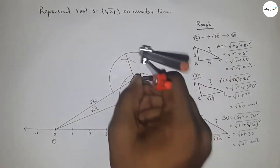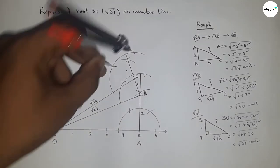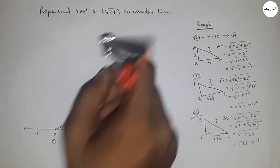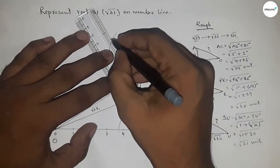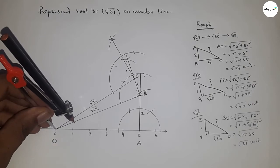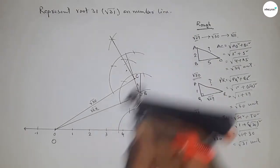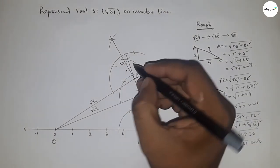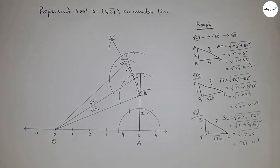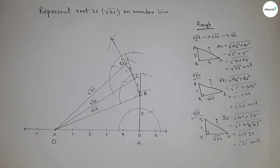First draw a 90-degree angle at point C using the compass — take any length, draw arcs with the same length, and construct the perpendicular. Then take one unit length by compass, place it at C, and mark point D. This is one unit length. Now join O and D — we can say that OD equals root 31 units.